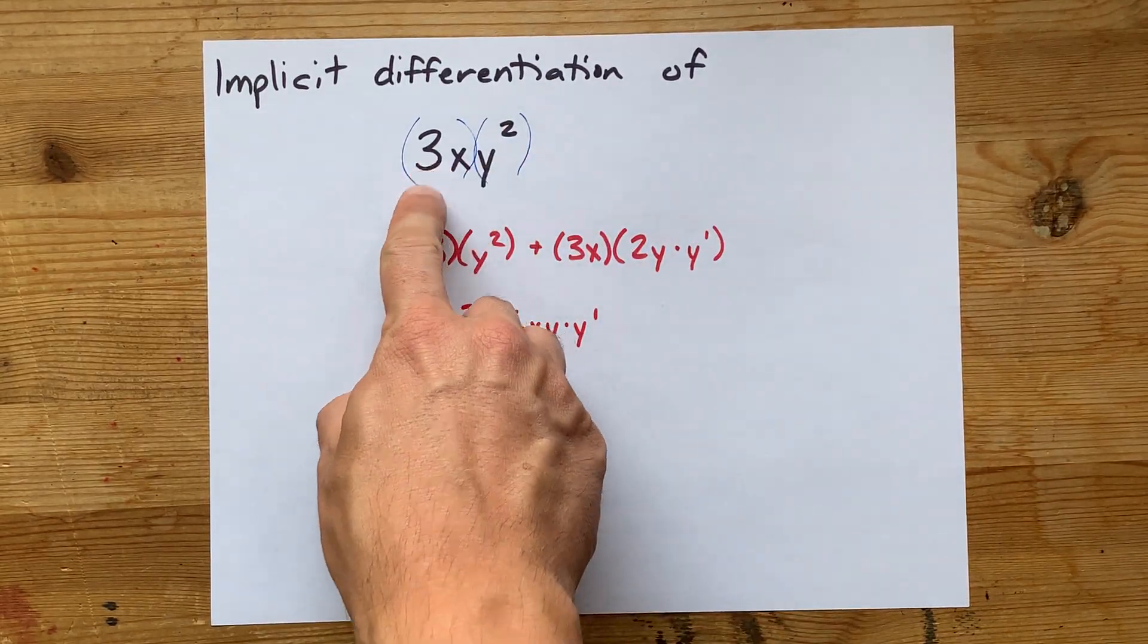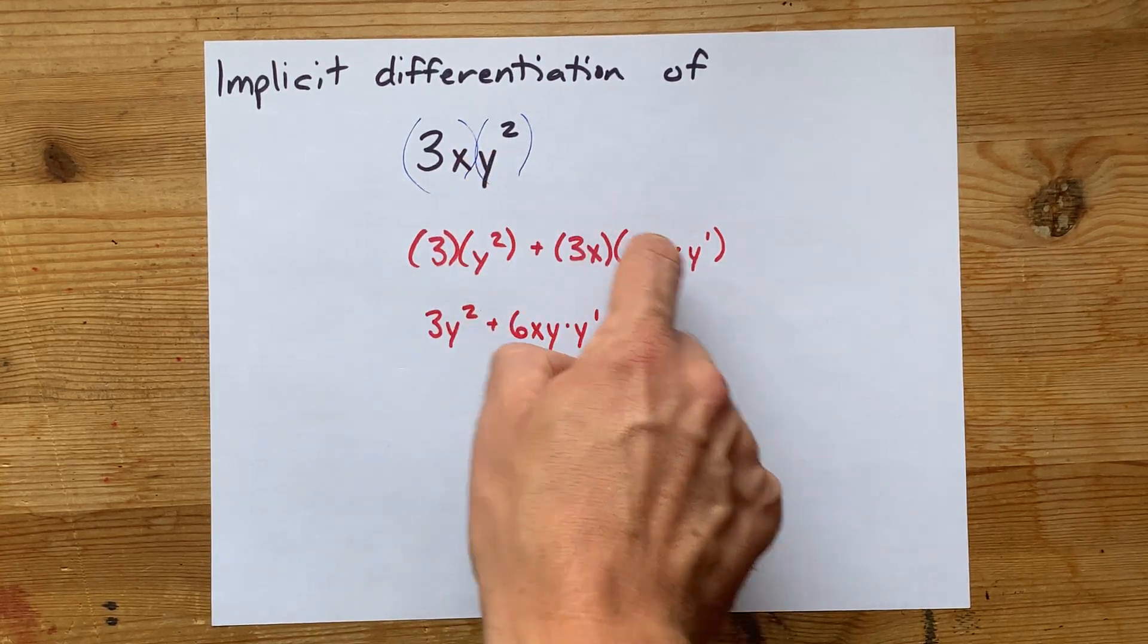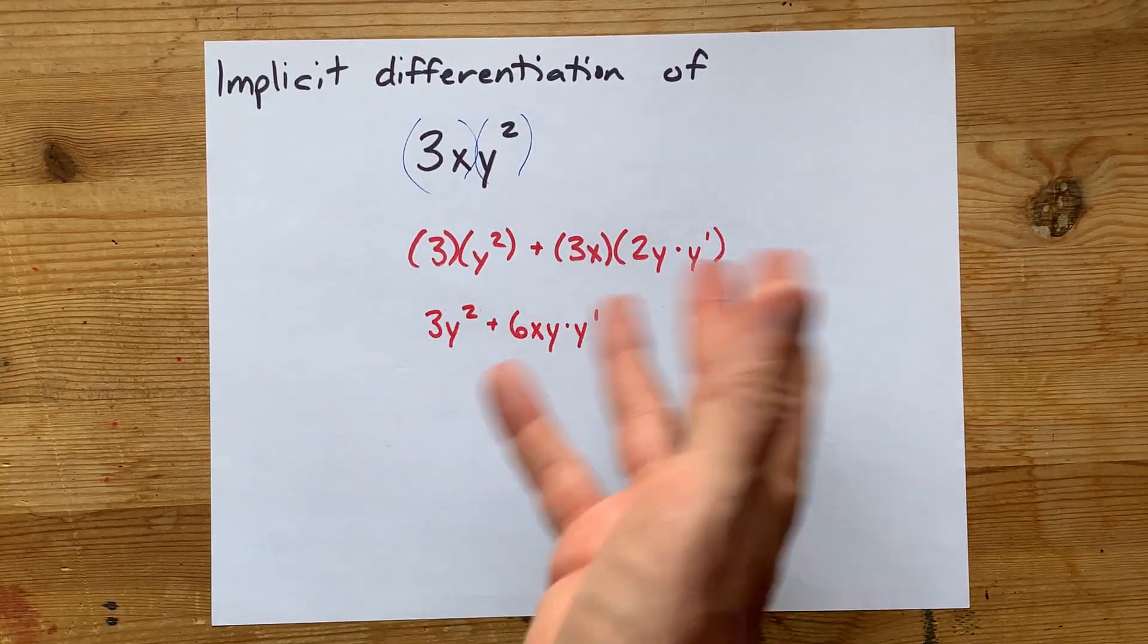Product rule. Derivative of that times that, plus derivative of that times that. Simplify, done.